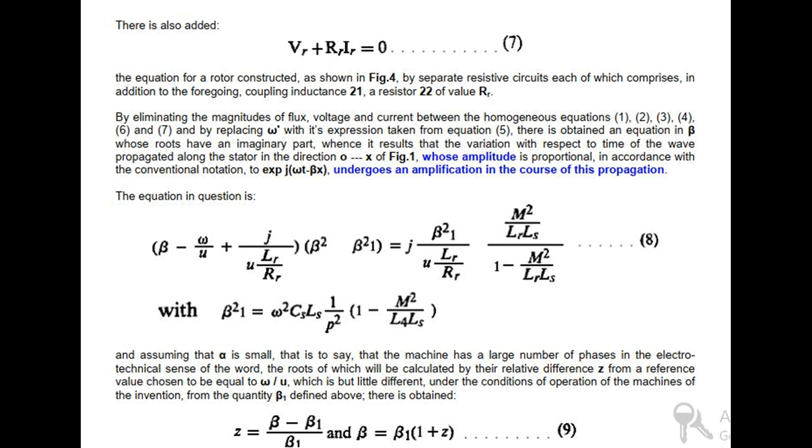There is also added the equation for a rotor constructed as shown in Fig 4, by separate resistive circuits each of which comprises, in addition to the coupling inductance 21, a resistor 22 of value RR. By eliminating the magnitudes of flux, voltage and current between the homogeneous equations 1, 2, 3, 4, 6, and 7, and by replacing omega-S with its expression taken from equation 5, there is obtained an equation in omega-R whose roots have an imaginary part, whence it results that the variation with respect to time of the wave propagated along the stator in the direction O-X of Fig 1, whose amplitude is proportional, in accordance with the conventional notation, to exp(jωt - βx), undergoes an amplification in the course of this propagation.